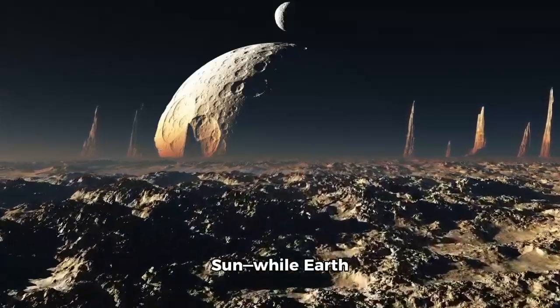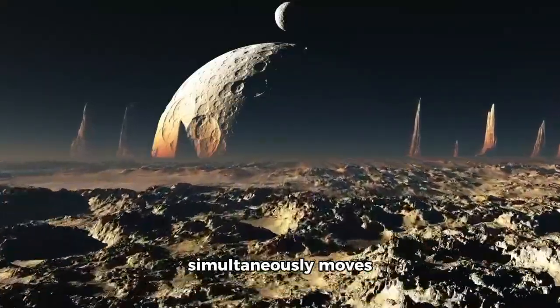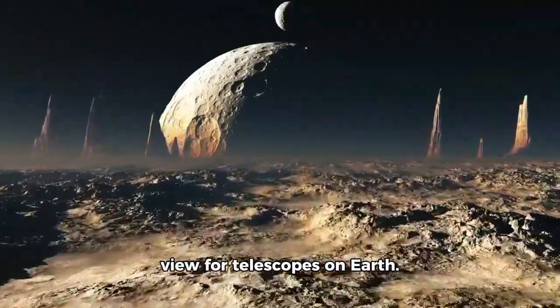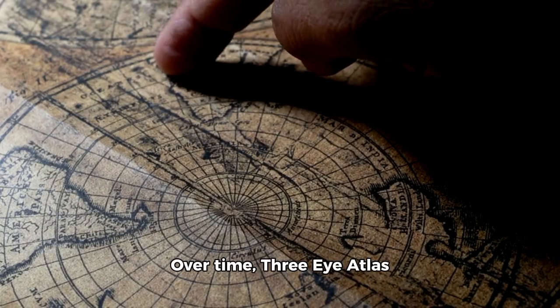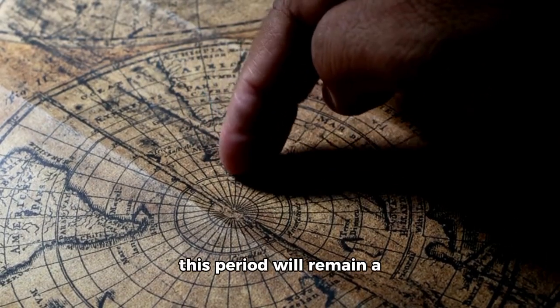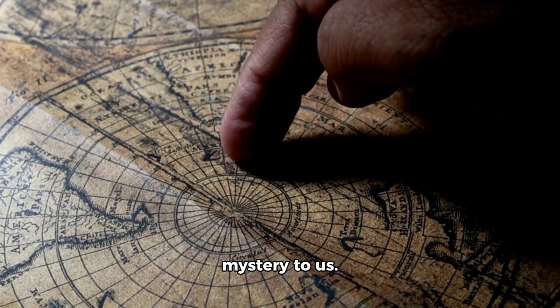As it moves closer to the Sun while Earth simultaneously moves away, the comet has already slipped out of view for telescopes on Earth. Over time, 3-Eye Atlas is hiding behind the Sun.